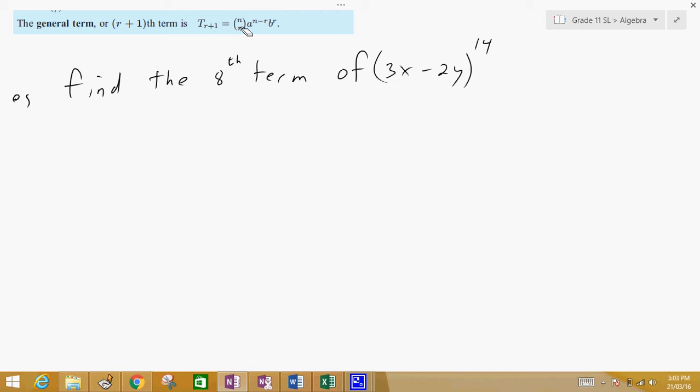So, for instance, if I have 3x minus 2y to the power of 14, what I want to do is find the 8th term. So, term 8. Well, if this is term 8, that means r plus 1 is 8, that means r is equal to 7.